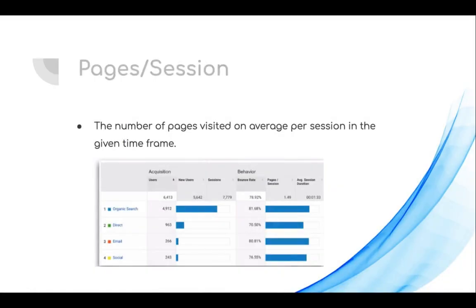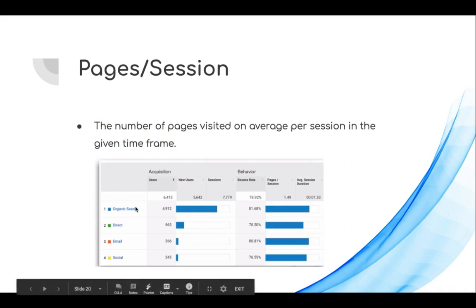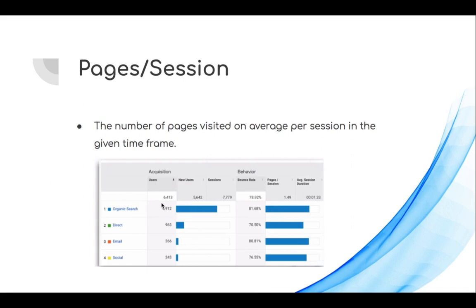The next term is pages per session — the number of pages visited on average per session in a given time frame. Looking at this report, people coming from organic search have a higher pages per session, while people coming directly have a lower pages per session. Pages per session and page views per session are the same thing.